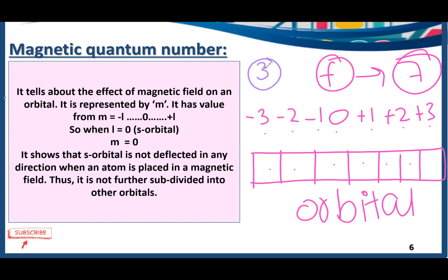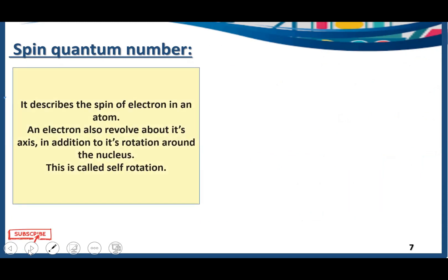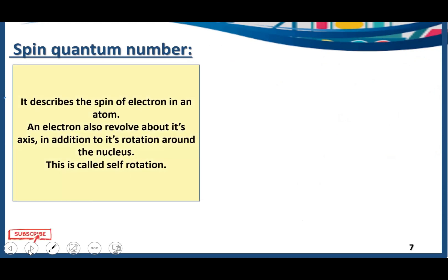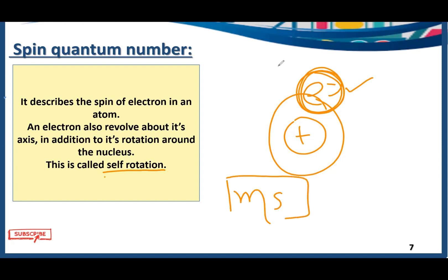Spin quantum number is the last quantum number. As the name indicates, it describes the spin of an electron in an atom. Electrons revolve around the nucleus and also have a spin around their own axis — this is called self-rotation. Spin quantum number is represented by ms. Due to this self-rotation, the electron has two spins: +1/2 in the clockwise direction and −1/2 in the anticlockwise direction.